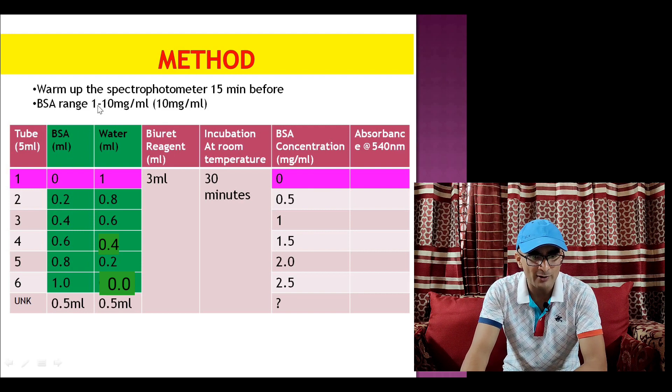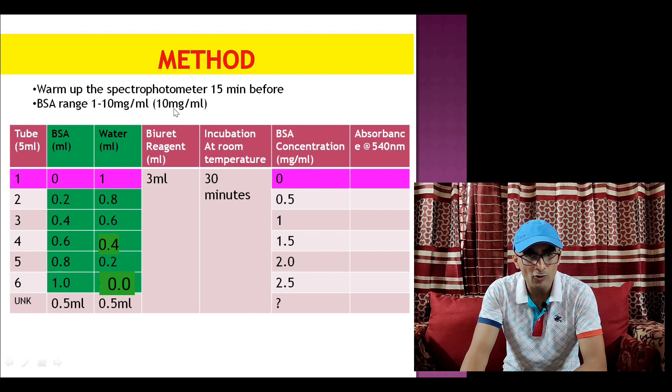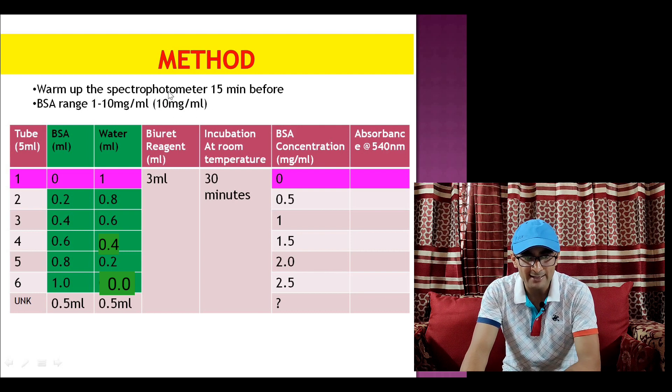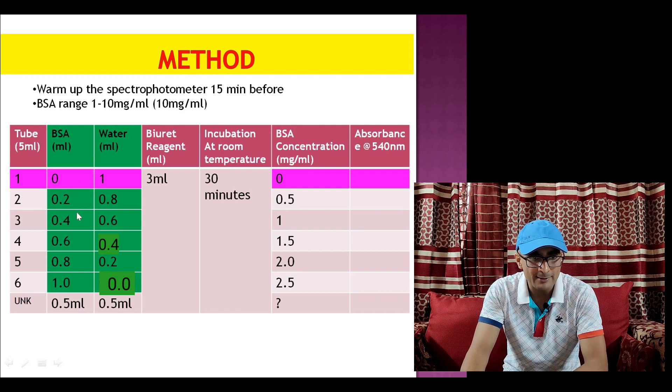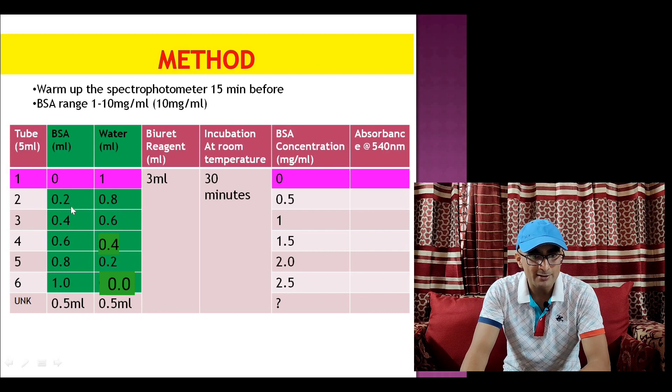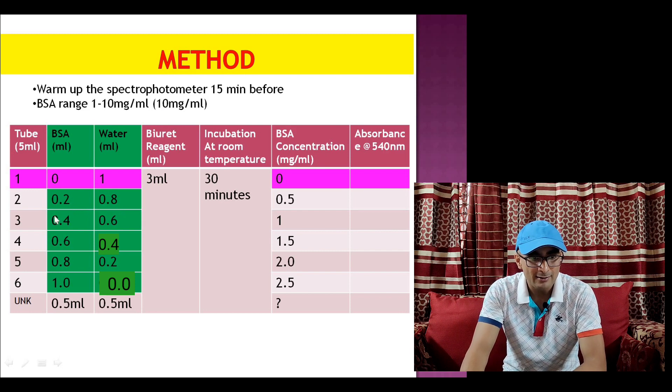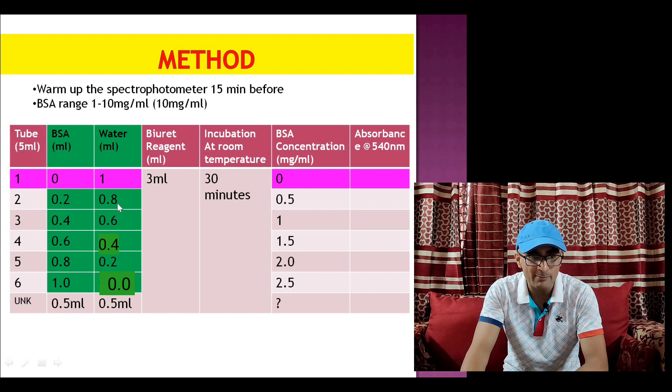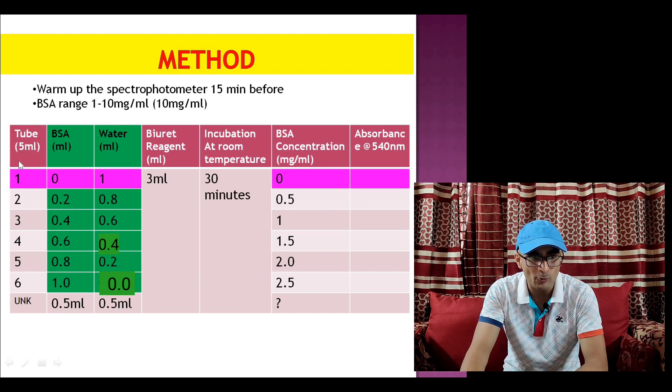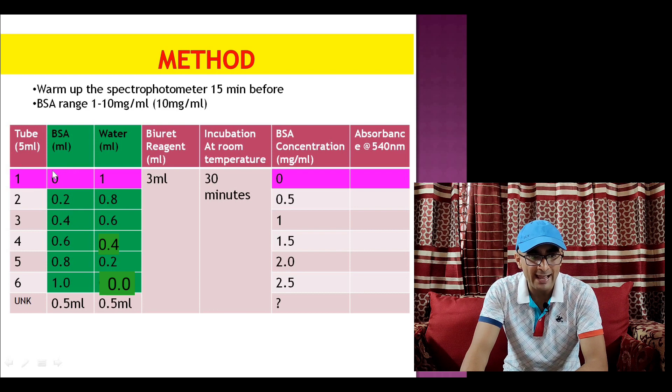Different range of BSA are used. For example, we may have a stock of 10 mg per ml BSA that can be diluted for 1 ml sample solution. For example, we can take 0.2 ml BSA and add 0.8 ml water. In one of the test tubes we don't add BSA, that works as a blank.